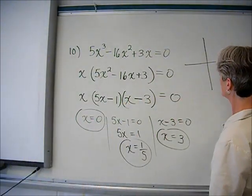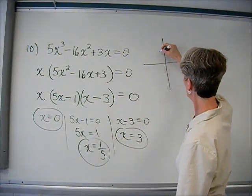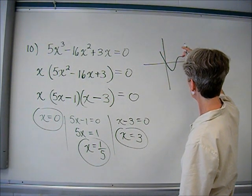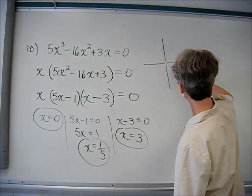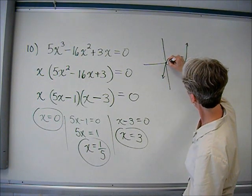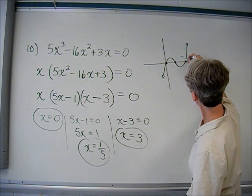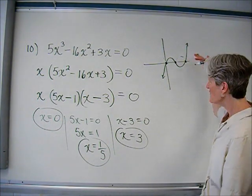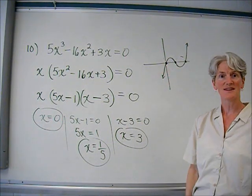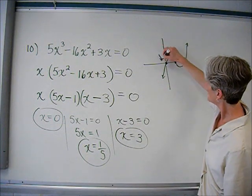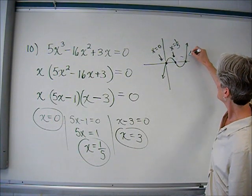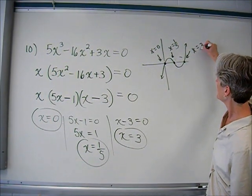If you drew a picture of this function, what would be special about those x locations? Those would be the places where the y value is zero — in other words, where it crosses the x-axis. There's your x equals zero, x equals one-fifth, x equals three. We call those the roots.